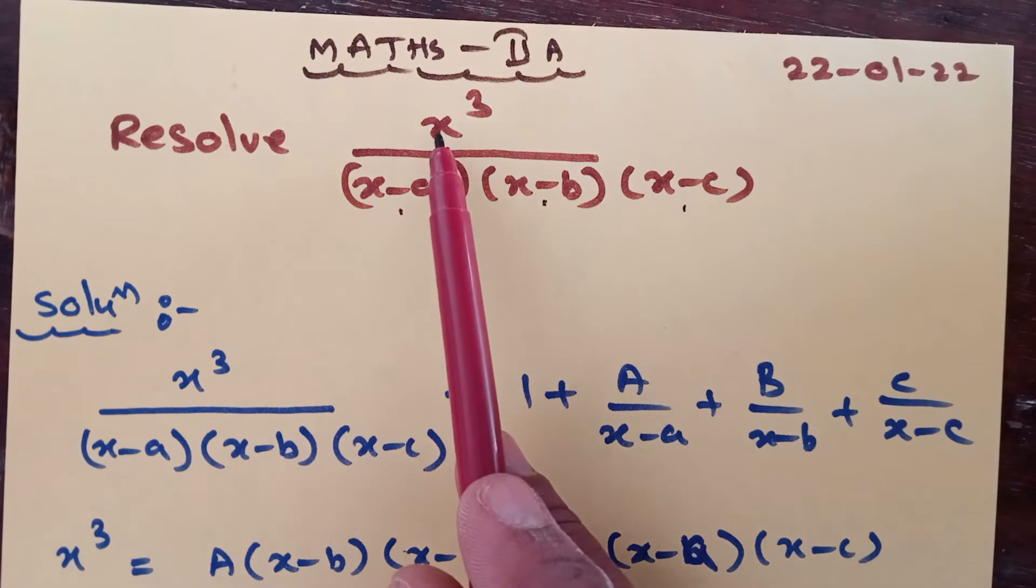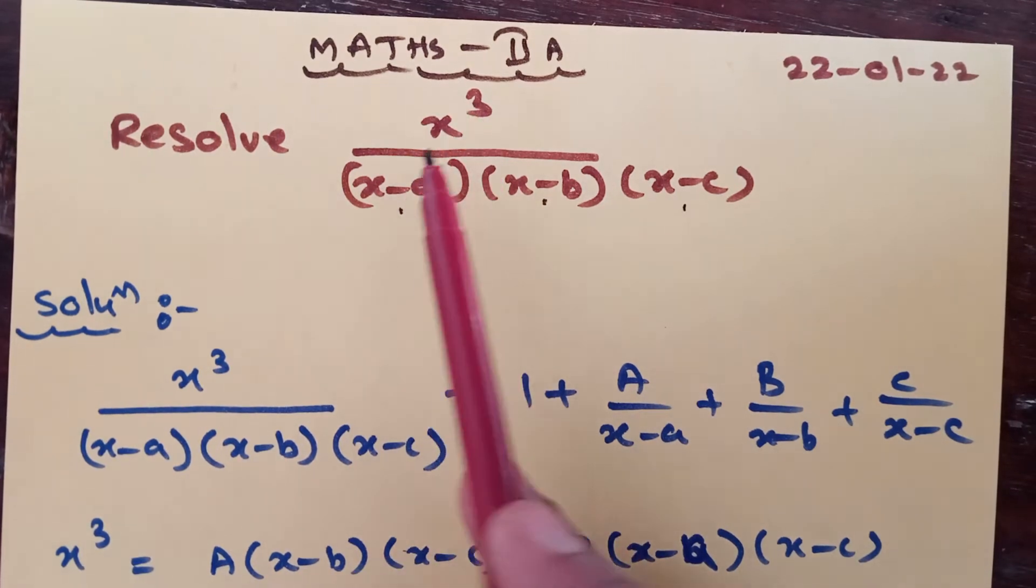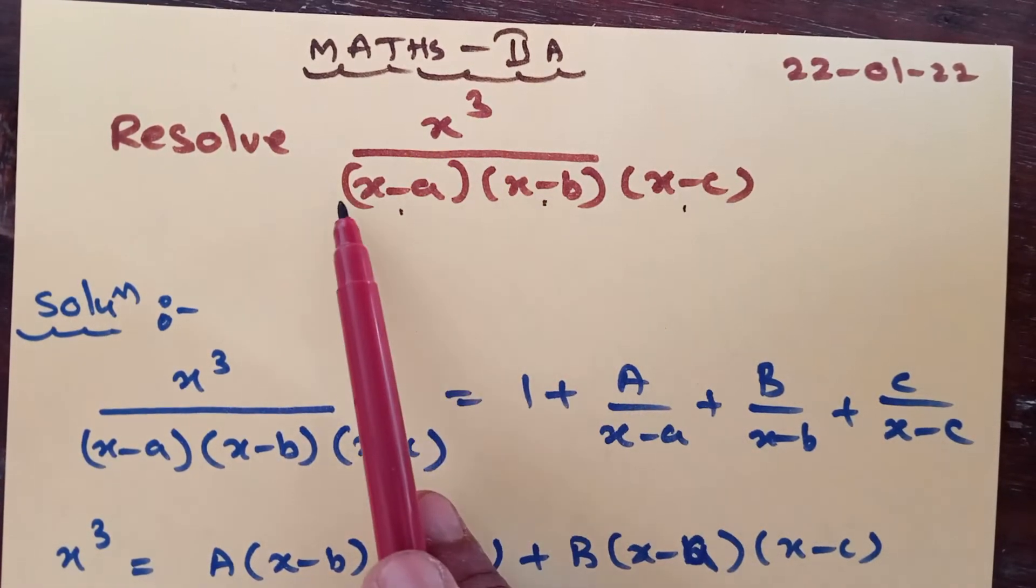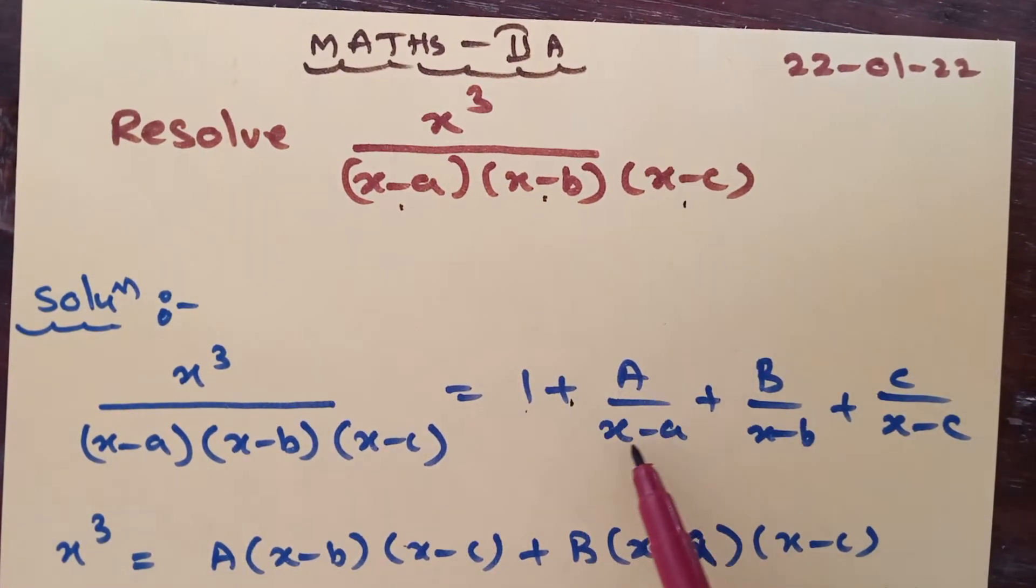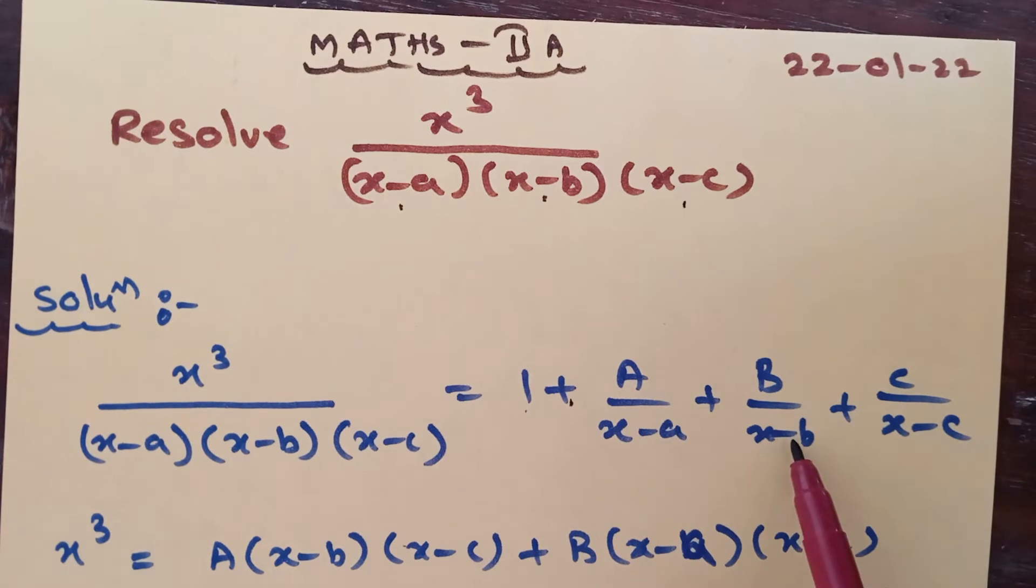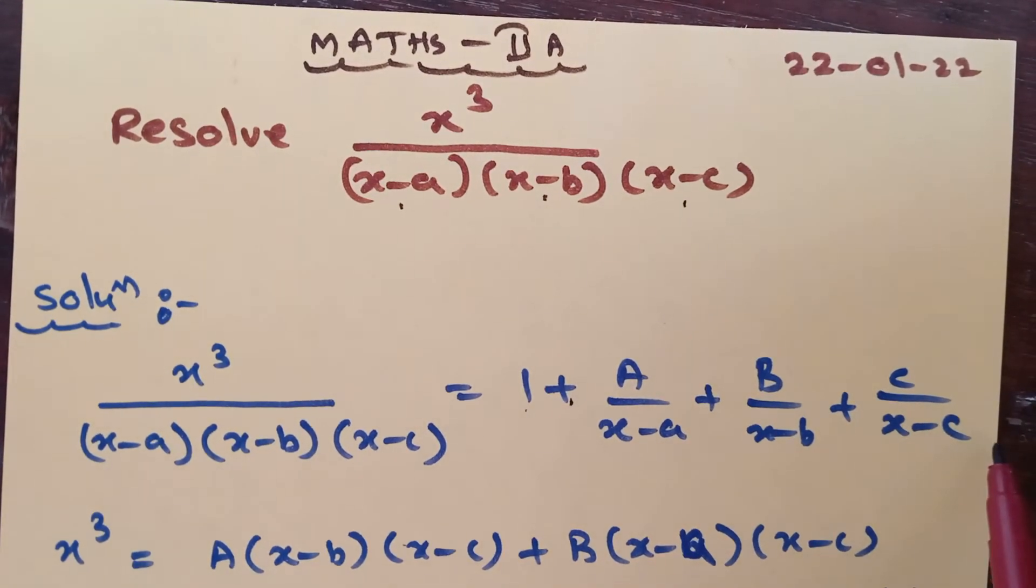So for that we have to take x cube coefficient 1, denominator x cube coefficient 1 becomes 1 here. So 1 plus A by x minus a, B by x minus b, plus C by x minus c.